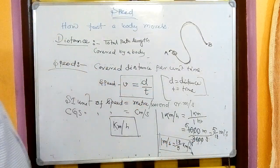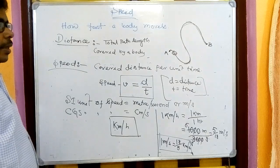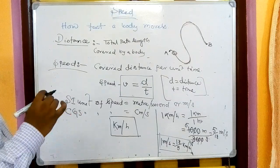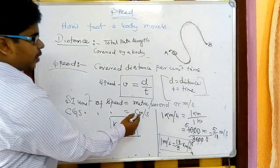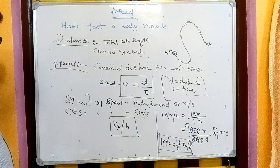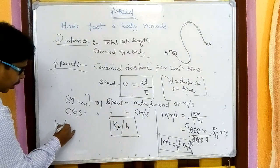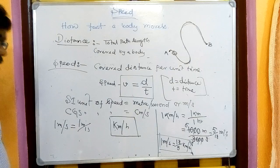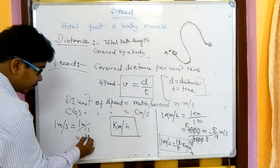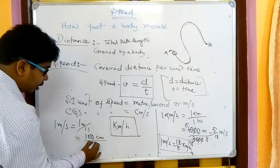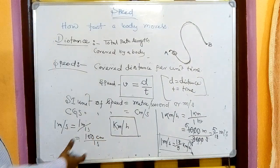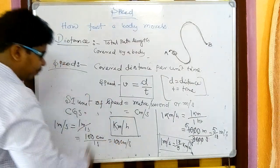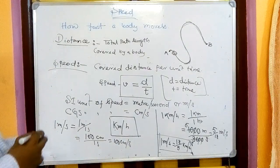We can also find the relation between m/s and cm/s. One m/s = 1 meter per 1 second. Since 1 meter = 100 centimeters and the second stays the same, 1 m/s = 100 cm/s.